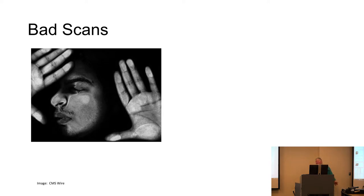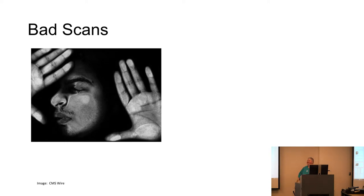Bad scans — these are fun. Why is quality checking important? What could go wrong? You can leave off a portion of your original document — it could be hanging over the edge of the scanner and then you've got the edge cut off. That's a great example. It could also be out of focus.